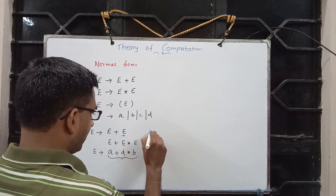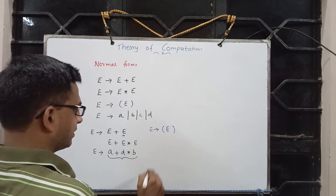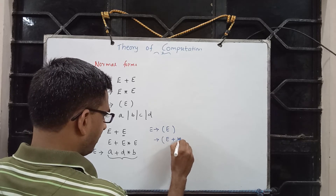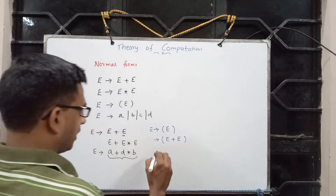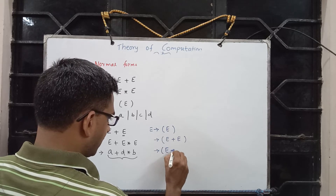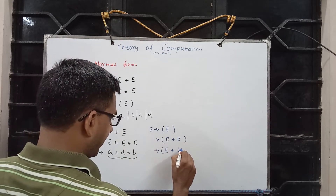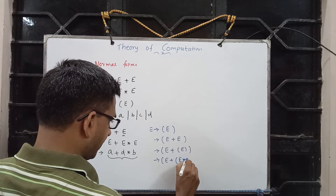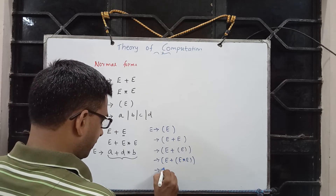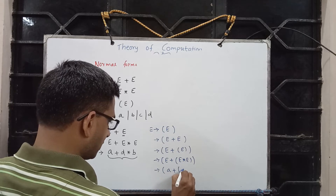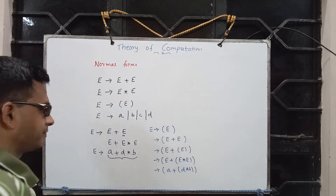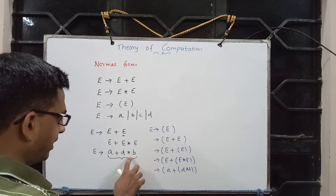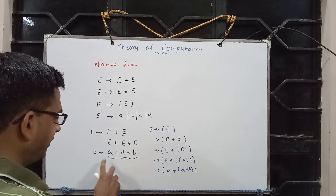One can also do the following: take E implies left parenthesis E right parenthesis, then replace the inner E by E plus E. We know E implies E star E as well, so let me write E plus for one part and E star E for another, then substitute appropriate terminals: A plus D star B inside the parentheses.